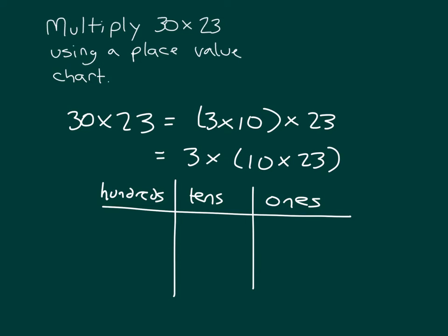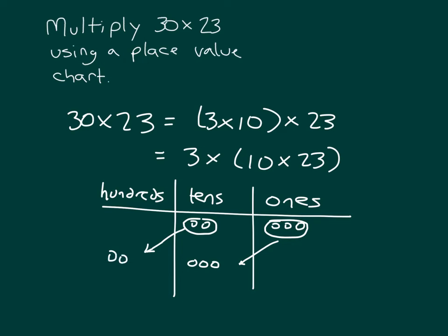To model 10 times 23, we know that when we multiply by 10 — like 1 times 10 would be worth 10 — so we'll model 23 first. We've modeled 23, but we have not yet modeled the times 10. When we multiply those 3 ones by 10, we get 3 tens. And when we multiply those 2 tens by 10, we get 2 hundreds.